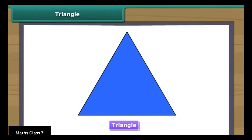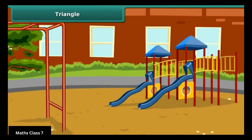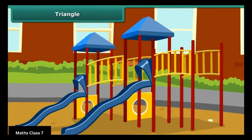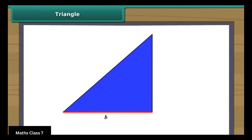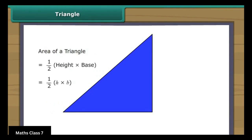What is a triangle? A triangle is a three-sided closed figure. Have you noticed the slider in the park? It is in the shape of a triangle. Can we find the area of a triangle? Yes, we can find the area of a triangle by using the formula for area of triangle. For this, we require the measures of the base and the height of the triangle. The area of a triangle is half the product of its height and base.